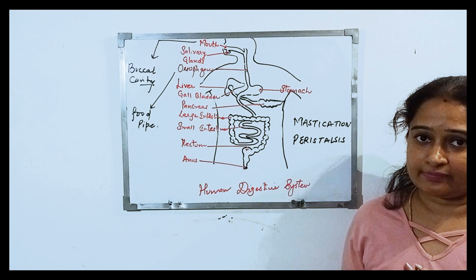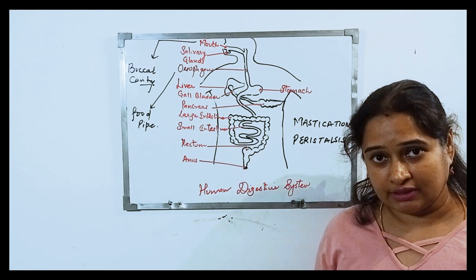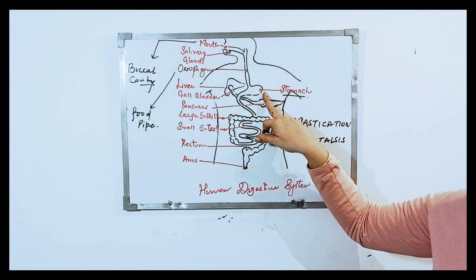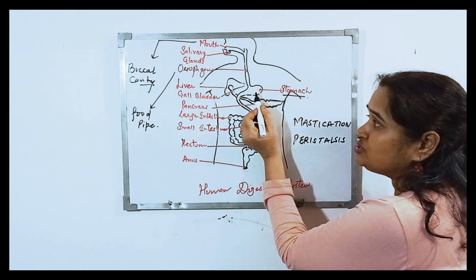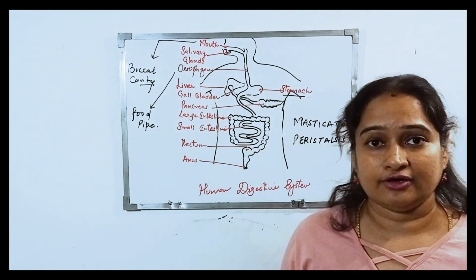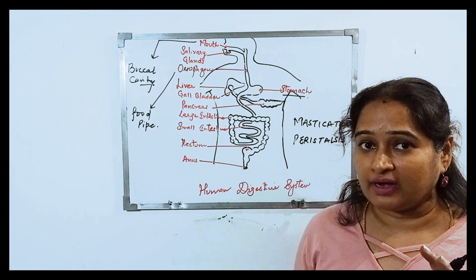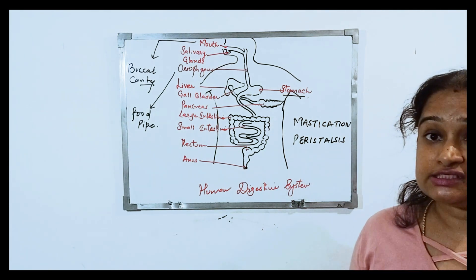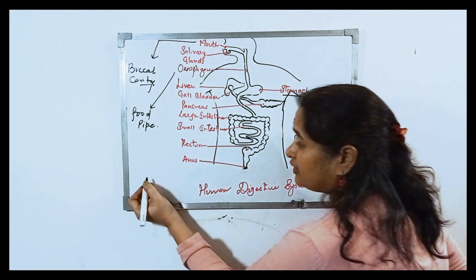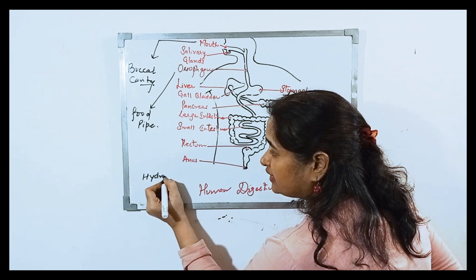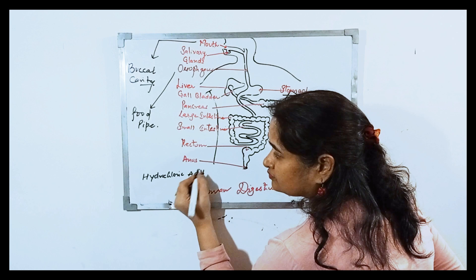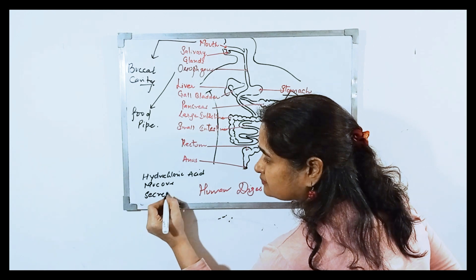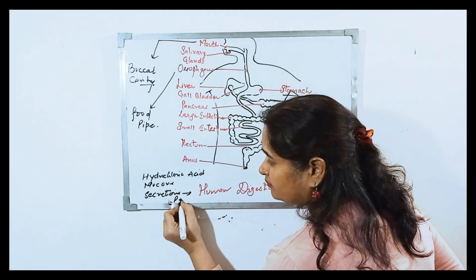The food has now reached the stomach. Stomach is a U-shaped gland present on the left side of our abdomen. It is the widest part of our alimentary canal. The walls of the stomach secrete three types of juices: hydrochloric acid, mucus, and secretions which include the enzyme pepsin.